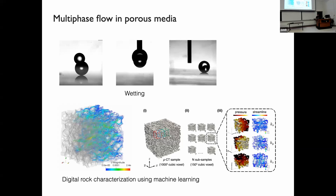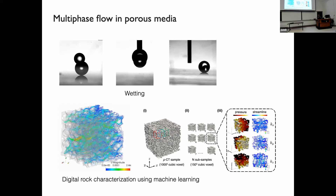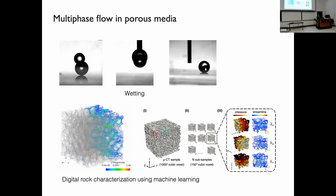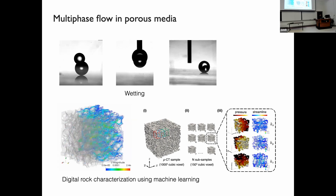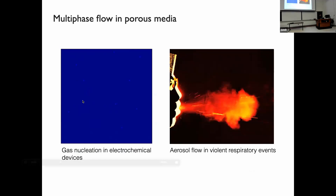Another project we're actively working on is digital rock characterization using machine learning. We started with high-resolution computational fluid dynamics simulations, completed a massive number of these simulations, and then fed the results into a convolutional neural network to predict properties such as the permeability and thermal conductivity of the porous material.